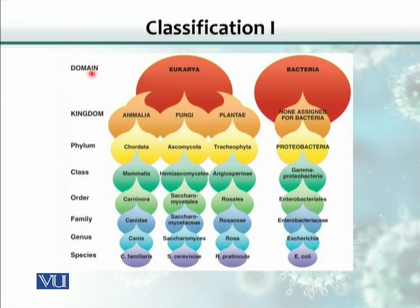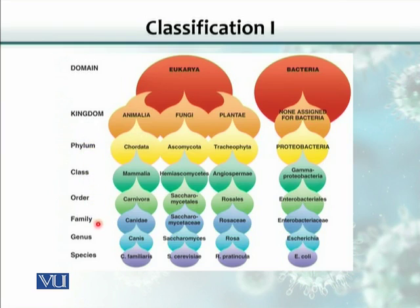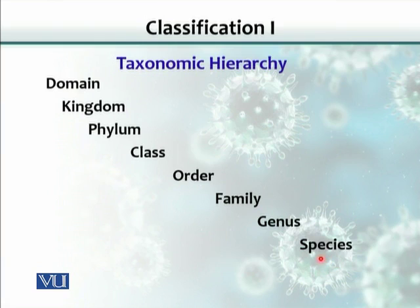Eukarya are subdivided into three kingdoms: Animalia, Fungi, and Plantae. For Bacteria and Archaea, no kingdoms have been devised. The next categories are phylum, then class, then order, then family, then genus, then species. Organisms that closely resemble each other at the lowest level are placed in a species. Many species form a genus, many genera combine into a family, many families make an order, many orders make a class, many classes make a phylum, and many phyla are grouped into a kingdom, then kingdom into domain.